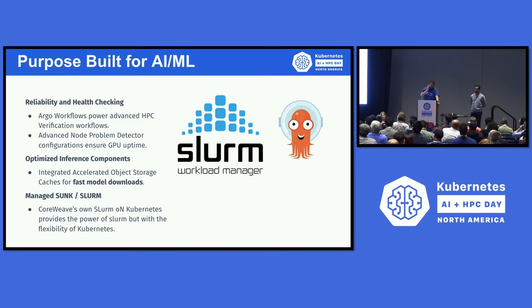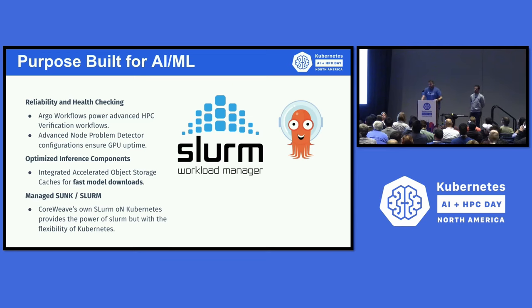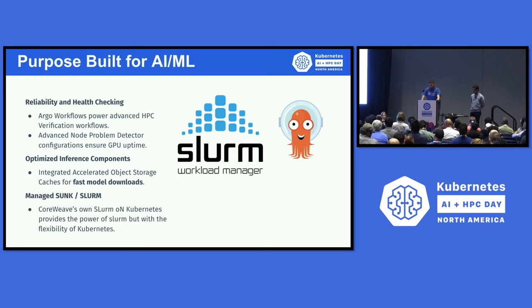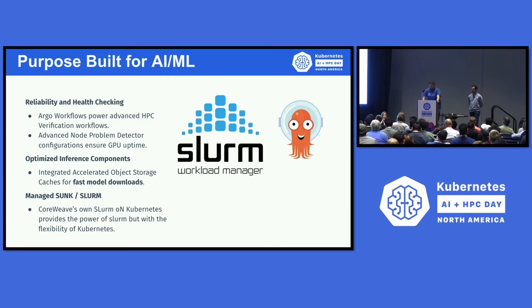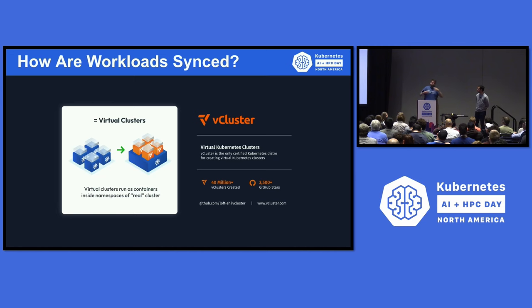We also have a lot of things specific to GPU-style management of nodes. We have a really extensive HPC verification workflow framework based on Argo Workflows for ensuring that things like the H100s and A100s are healthy. There's a lot of burn-in tests you need to run — you need to make sure they're actually performing, especially with new systems. We take care of all that. The other cool things are accelerated object caches: we have regional co-located object caches that can increase your model download times. And we're going to be open-sourcing Slurm on Kubernetes, basically called SUNK, coming out Q1. We can run Slurm on Kubernetes and it's really nice. Now I'll hand it over to Lucas to talk about how the syncing actually works.